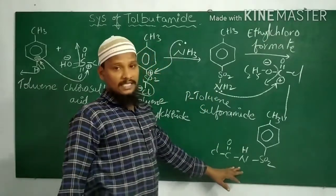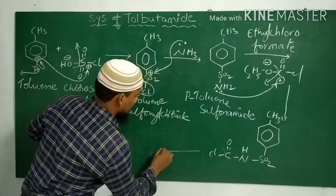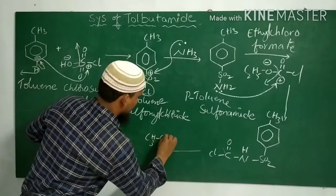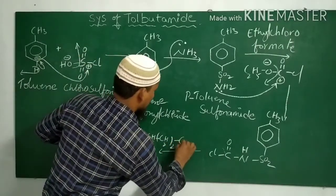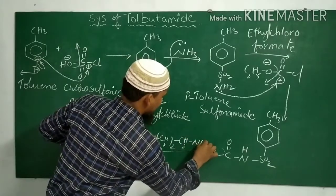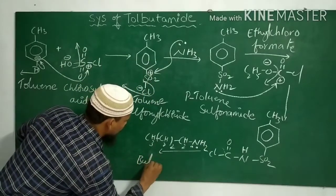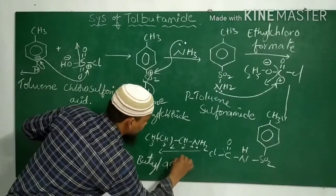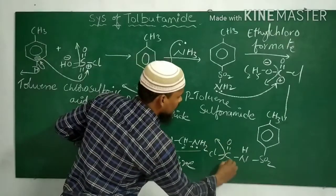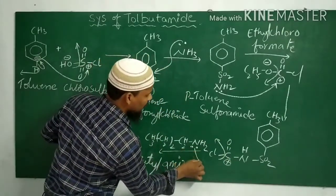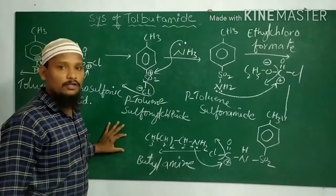This resultant molecule is again treated with butylamine. Chlorine gets eliminated, giving a positive charge. Butylamine donates its lone pair to the carbonyl carbon, and the resultant molecule is Tolbutamide.